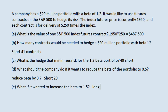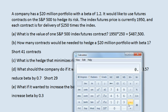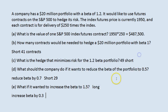We want to increase the beta to 1.5 from 1.2, which is an increase of 0.3. So we need 0.3 times the standard 41 contracts: 0.3 times 41 equals 12.3, and the closest we can come without fractional contracts is 12. So we will go long 12 contracts.